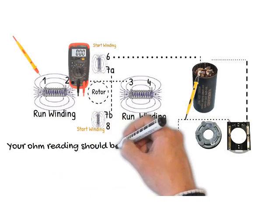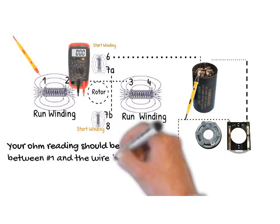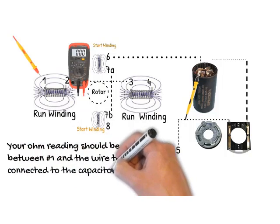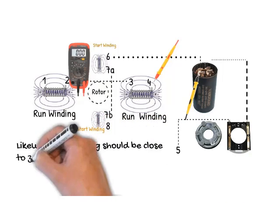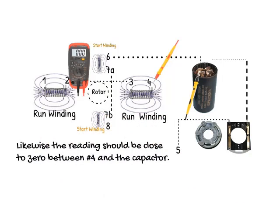Your ohm reading should be close to zero between number one and the wire that remains connected to the capacitor. Likewise, the reading should be close to zero between number four and the capacitor.